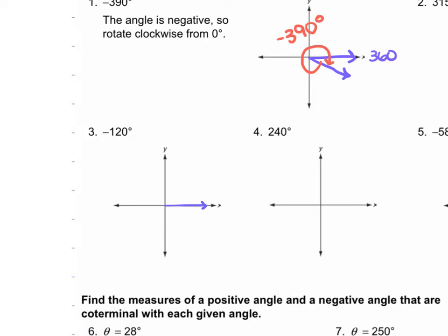Starting from the beginning, we start at that initial side on the positive x-axis, then we're going to go down instead. So negative 90, negative 180 — our terminal side is going to be about here, and then it's just going to open down to negative 120.